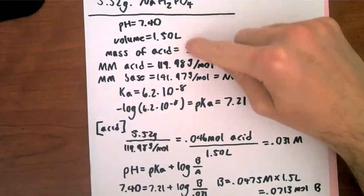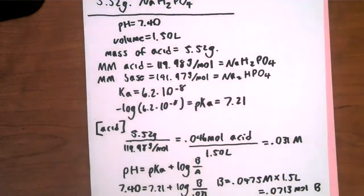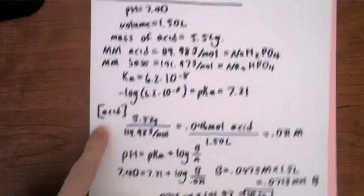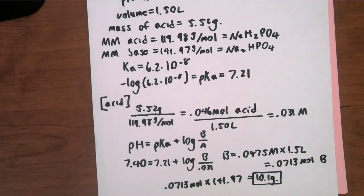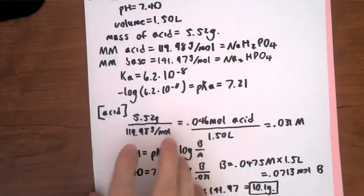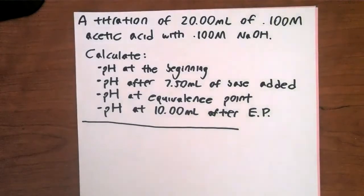So the answer is: you need 10.1 grams of Na₂HPO₄ to give the buffer. It's not really tough — the worst part is setting it up. Write down everything you know, even stuff not directly asked for like molar masses and pKa. From there all you need is the concentration of acid, then plug into Henderson-Hasselbalch. This is the quickest and most approachable way to tackle it on an exam when you're pressed for time.